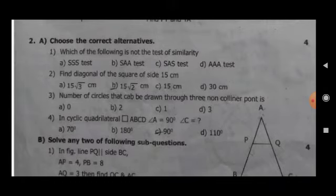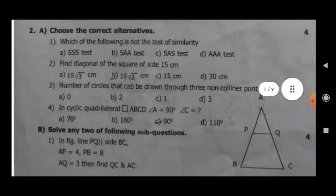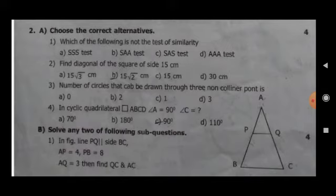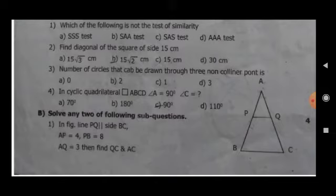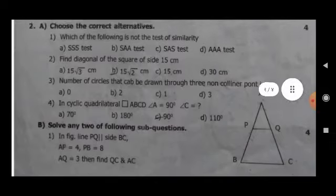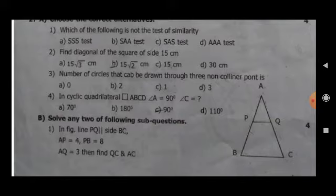Third, number of circles that can be drawn through three non-collinear points is: option A, 0; option B, 2; option C, 1; option D, 3. Fourth, in cyclic quadrilateral ABCD, angle A is equal to 90 degrees, then angle C is equal to what? Option A, 70 degrees. Option B, 180 degrees. Option C, 90 degrees. Option D, 110 degrees.